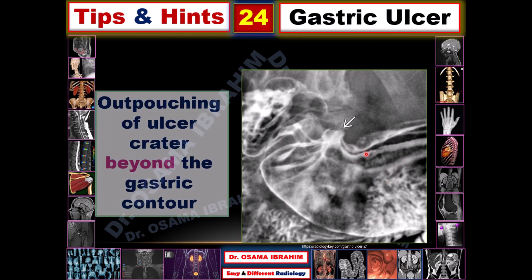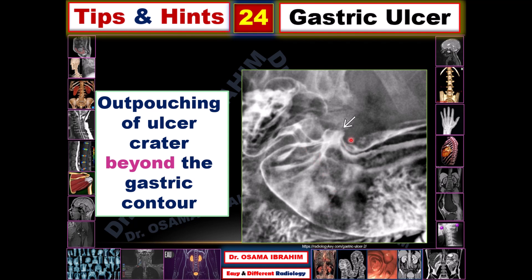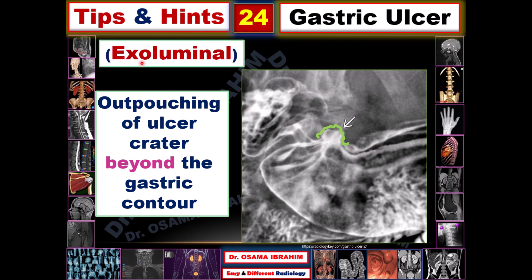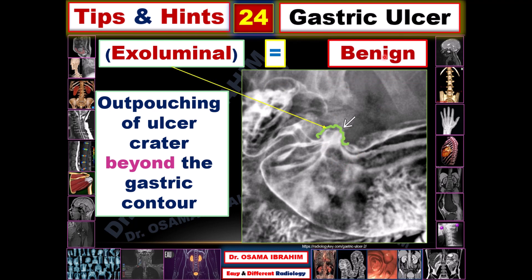Looking at the first criterion: this is a double contrast study of the stomach. This is the lesser curve, this is the greater curve, this region is the angular incisura, and this is the pylorus. This ulcer is appearing as an outpouching of the crater beyond the gastric contour — if you trace the gastric contour like this, the ulcer crater projects beyond it. This extraluminal location of the ulcer is a feature of benign gastric ulcer.